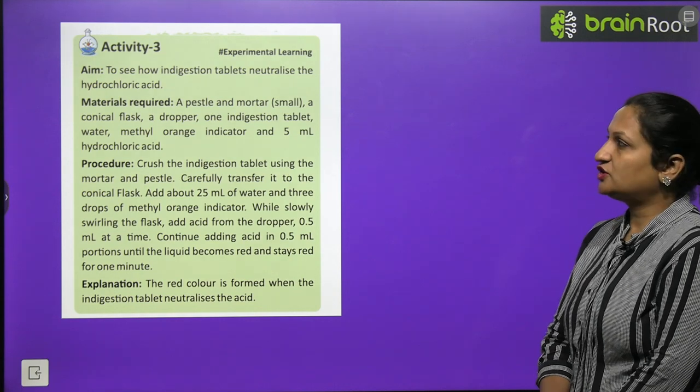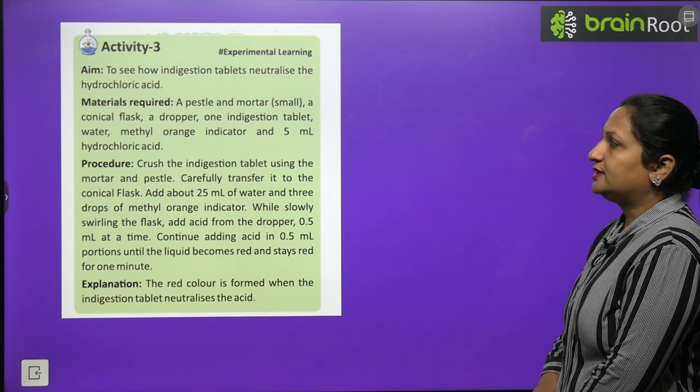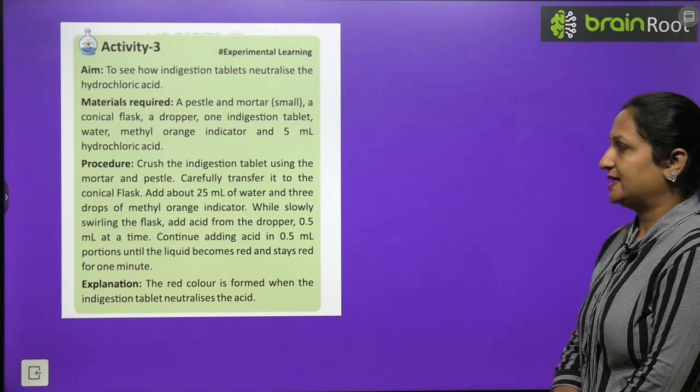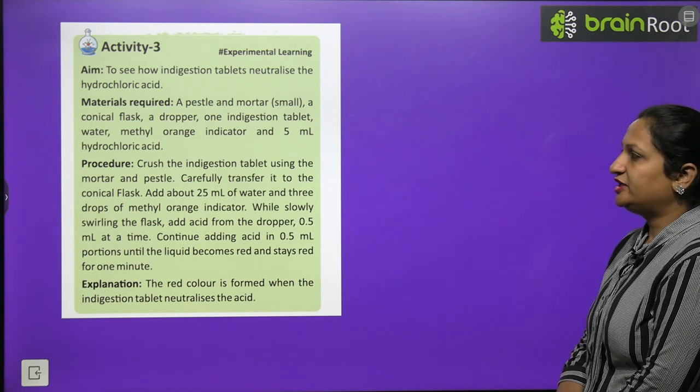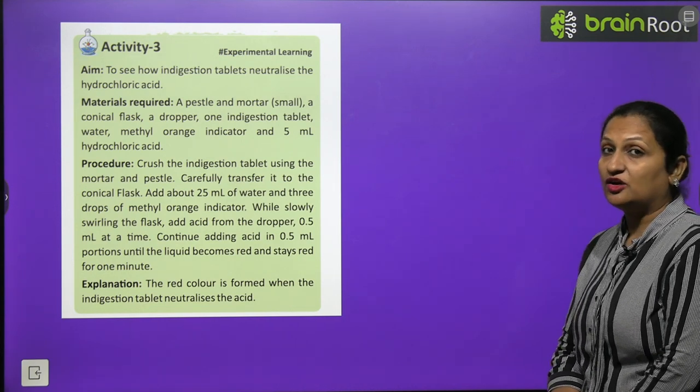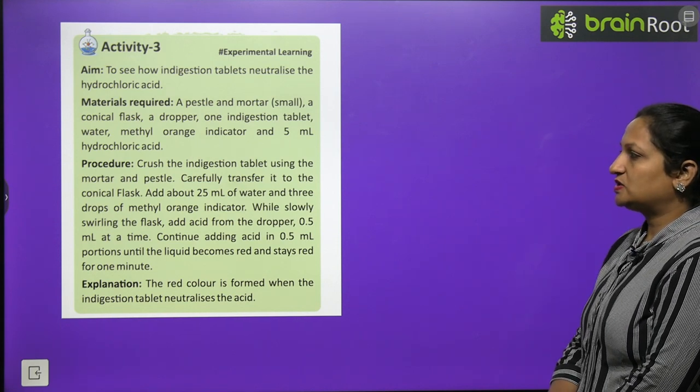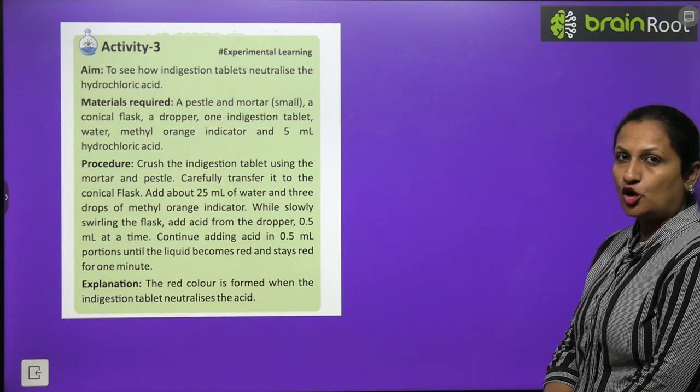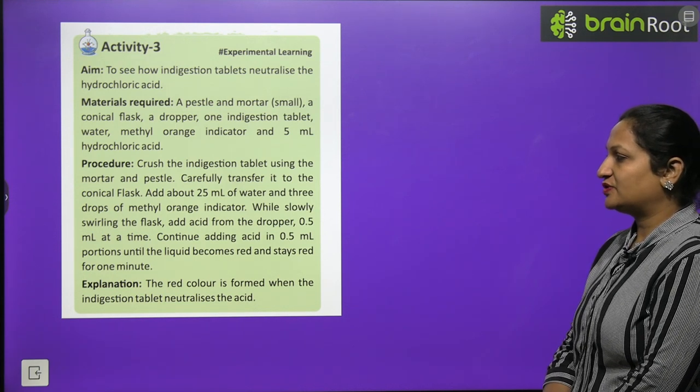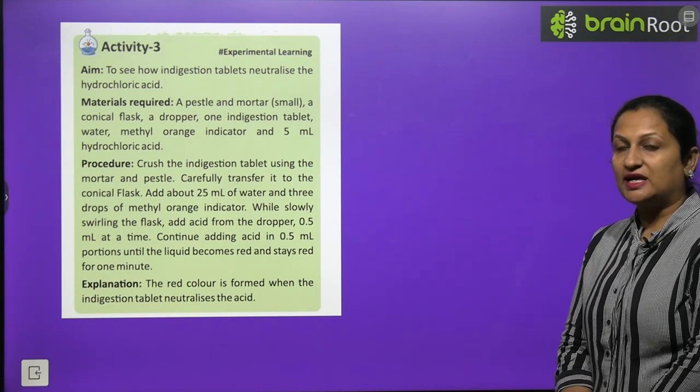Now have a look on activity, children. To see how indigestion tablets neutralize hydrochloric acid, we need pestle and mortar, a conical flask, dropper, one indigestion tablet, water, methyl orange indicator, and 5 ml of hydrochloric acid. Crush the indigestion tablet using mortar and pestle. Carefully transfer it into a conical flask. Add about 25 ml of water and 3 drops of methyl orange indicator. Why did we add methyl orange? So that we can tell that this indigestion tablet is basic in nature. While slowly swirling the flask, now we will add our acid drop by drop with dropper. Continue adding acid in 0.5 ml portions until the liquid becomes red and stays red for 1 minute. Explanation: the red color is formed when indigestion tablet is neutralized by the acid.